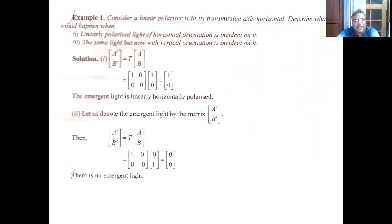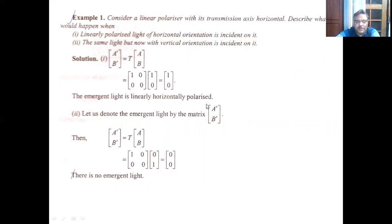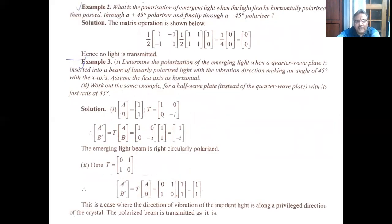As an example, when the incident light is linearly polarized with horizontal orientation and passes through a linear polarizer with horizontal transmission axis, multiplying the matrices gives [1, 0] — confirming horizontally polarized output. With a different polarization direction, we get a different result. If all elements of the resulting matrix are zero, that means there is no output light — a null matrix means no light.